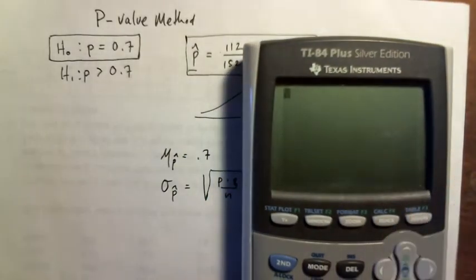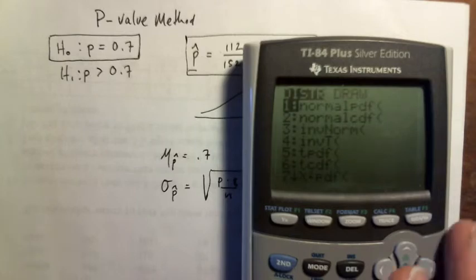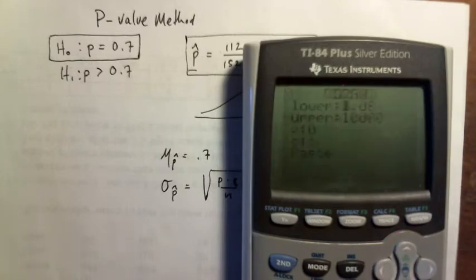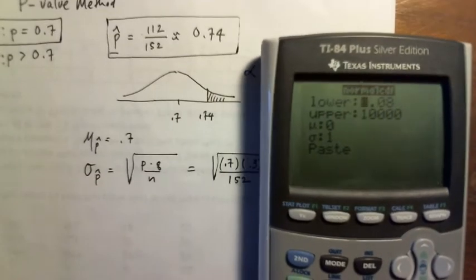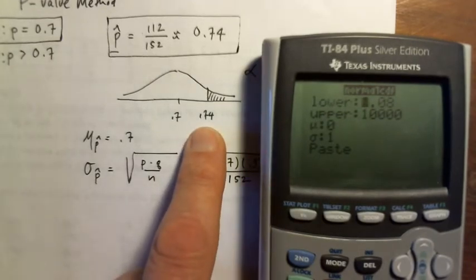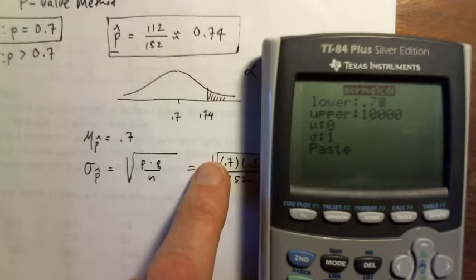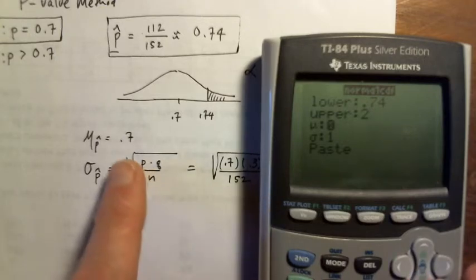So what I'm going to do is I'm going to go to distributions. I'm going to look at the normal CDF. The lower is going to be 0.74. The upper is going to be, I don't know, let's make it huge. Let's make it 200%. The mean is going to be 0.7.